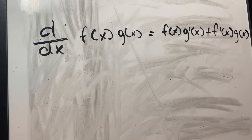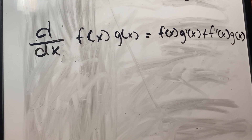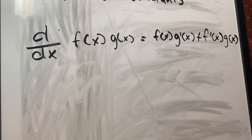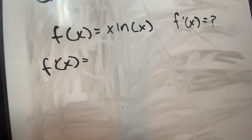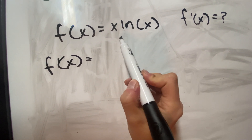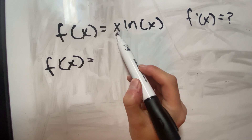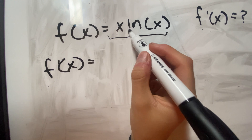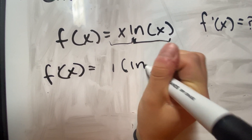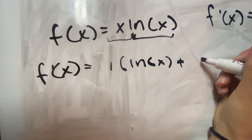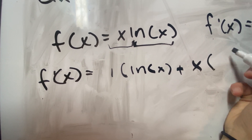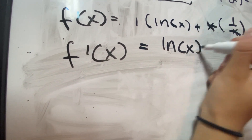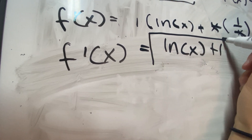The product rule of derivatives is used when you multiply two functions together when you're deriving. It becomes F times the derivative of G, plus the derivative of F times G. Here's a quick example using the function x ln(x). To derive this function, we recognize that the two parts are being multiplied and apply the rule: the derivative of the first multiplied by the second, plus the first multiplied by the derivative of the second. This gives us the natural log of x plus one — that is our derivative using the product rule.